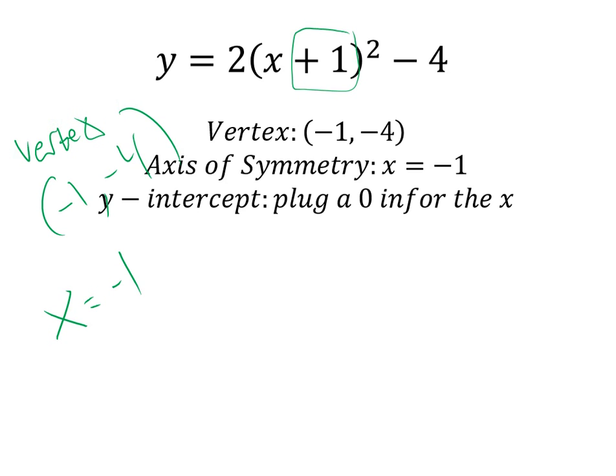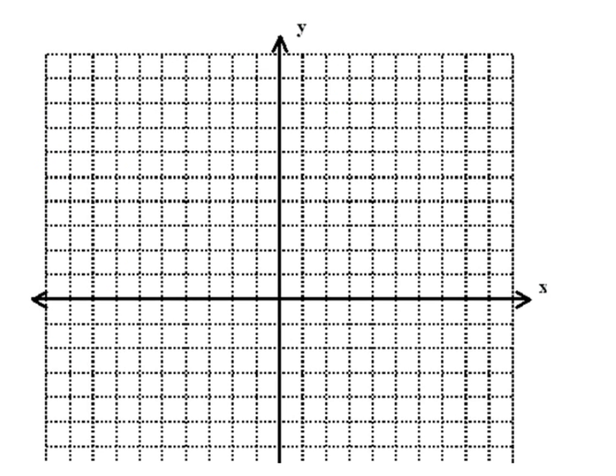To find the intercept, you'll plug in a 0 in for the X and see what you get, which would be negative 2, I believe. So that means your intercept will be at negative 2. So what you'll do is you'll start at negative 2, and then you're at negative 1, negative 4.